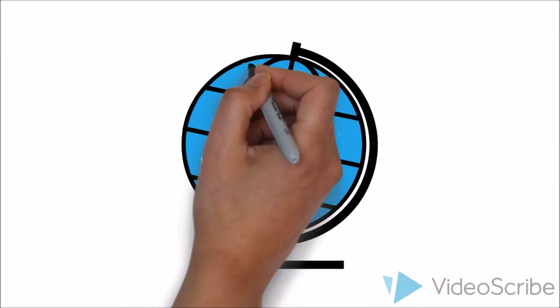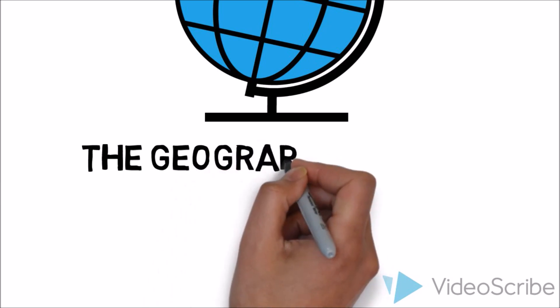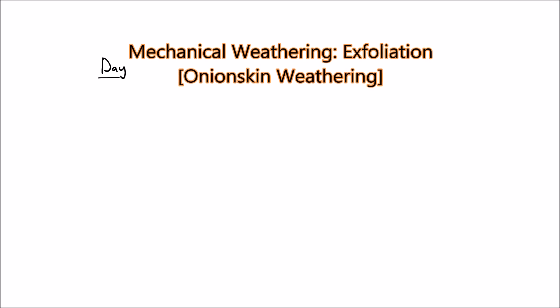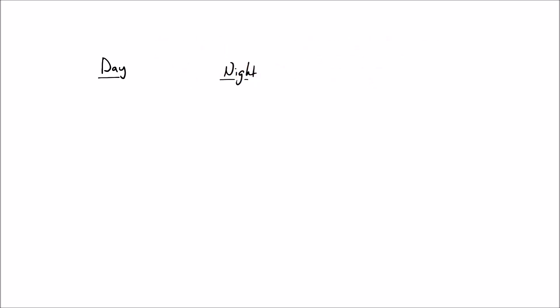Hello everyone. In this video we're going to be looking at a type of mechanical weathering. This is called exfoliation and it can sometimes be known as onion skin weathering as well. We'll see why at the end.